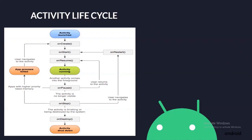As the user begins to leave the Activity, the system calls methods to dismantle the Activity. However, in some cases, this dismantlement is only partial, which means that the Activity still resides in memory and can still come back to the foreground. If the user returns to that Activity, the Activity resumes from where the user left off. With a few exceptions, apps are restricted from starting activities when running in the background. The likelihood of the system killing a given process depends on the state of the Activity at that time. Activity state and ejection from memory provides more information on the relationship between state and vulnerability to ejection.